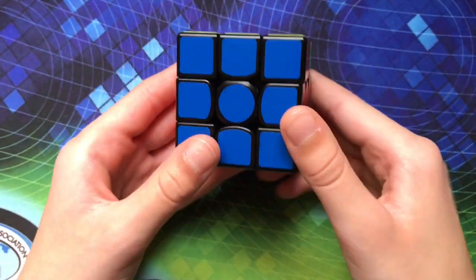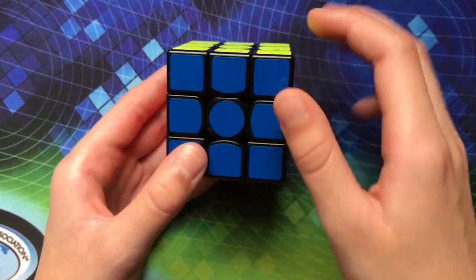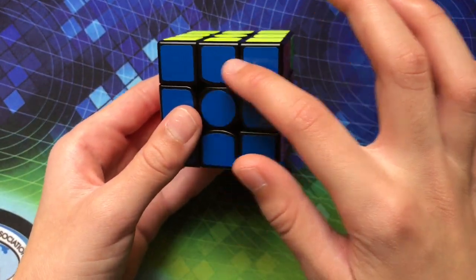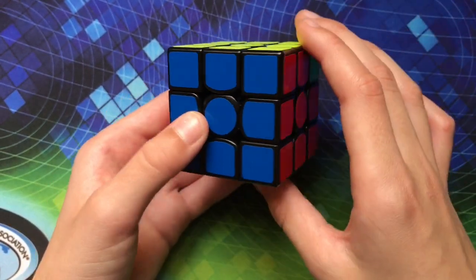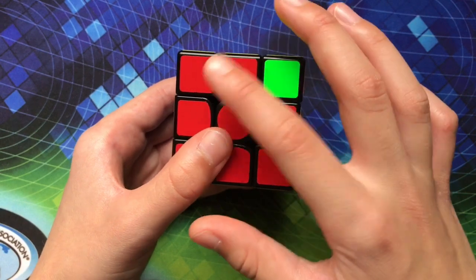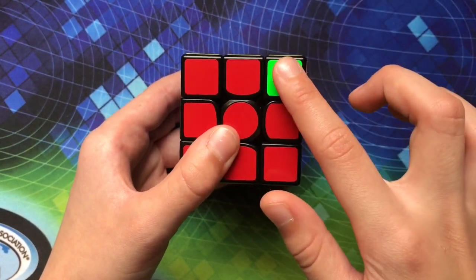So the way you recognize this algorithm is first you will notice that you have a block of 3 pieces. Now not very many other algorithms have 3 pieces connected but this one does. And then if you turn it over then you'll see this one has 2 pieces and this one is not matched up.